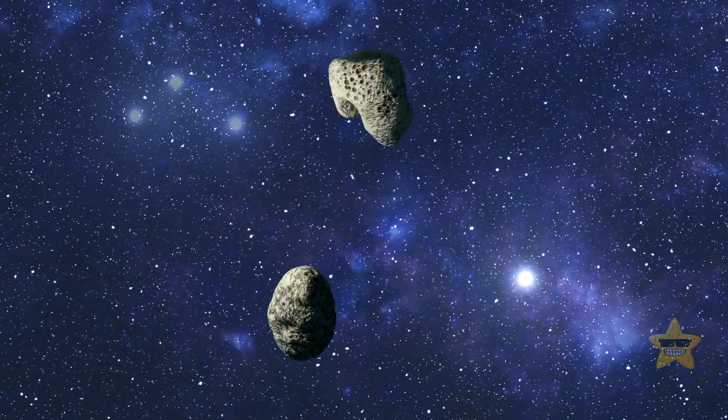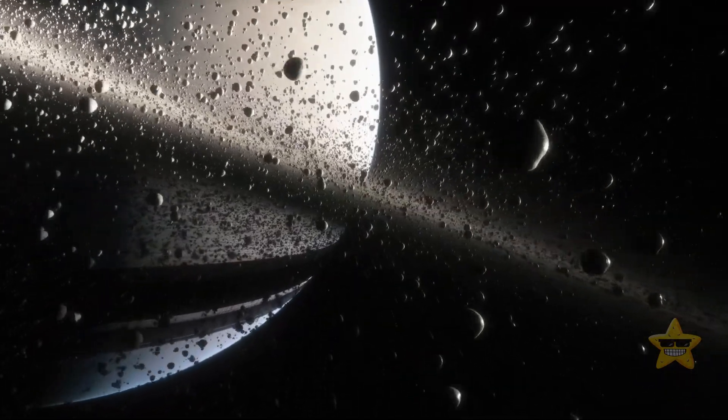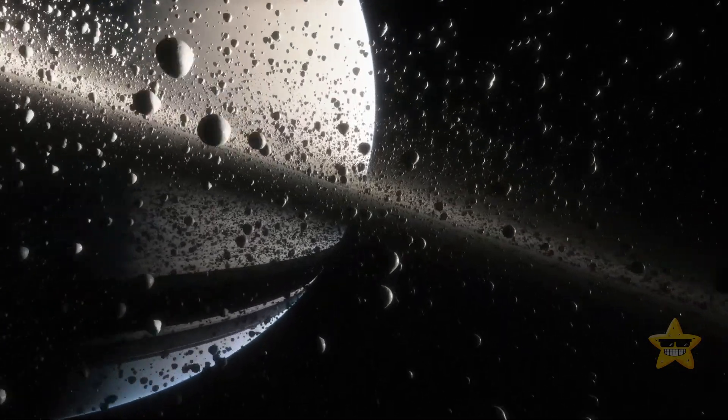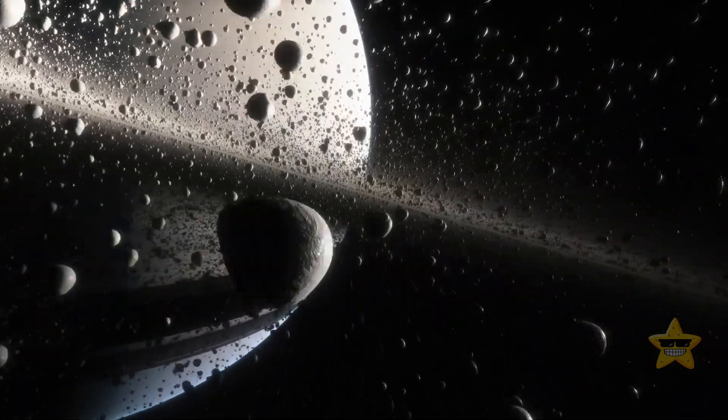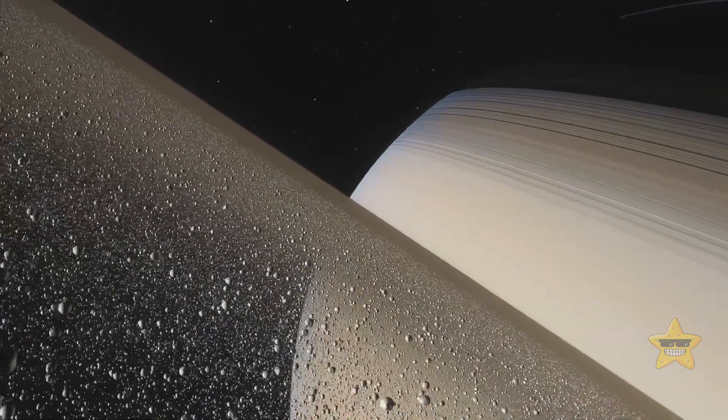Unlike planets, asteroids don't consist of layers. They're made of different kinds of metals and rocks and have no atmosphere. Funnily enough, some asteroids have moons of their own, and there are even asteroid binaries where two asteroids of similar size orbit each other.